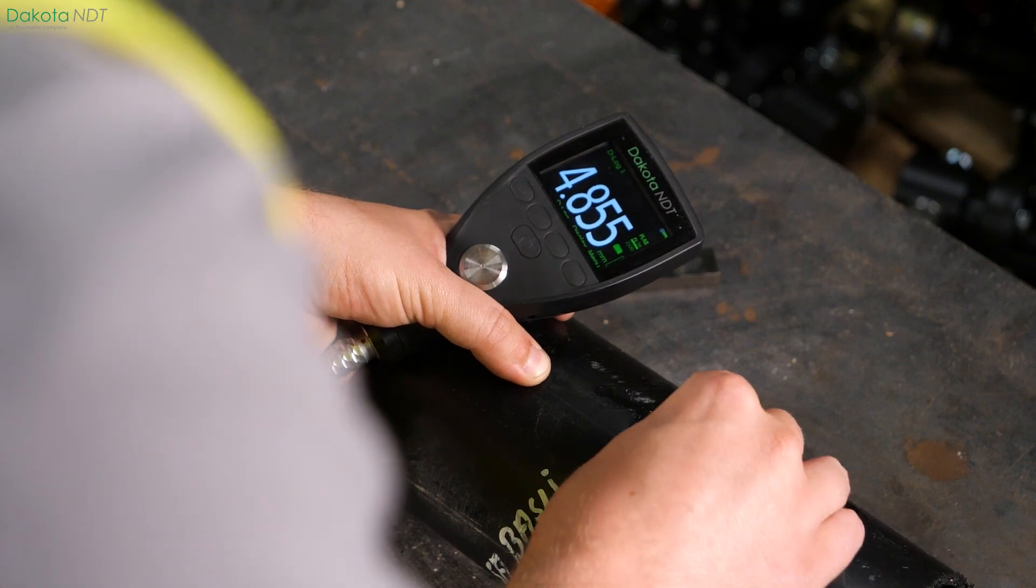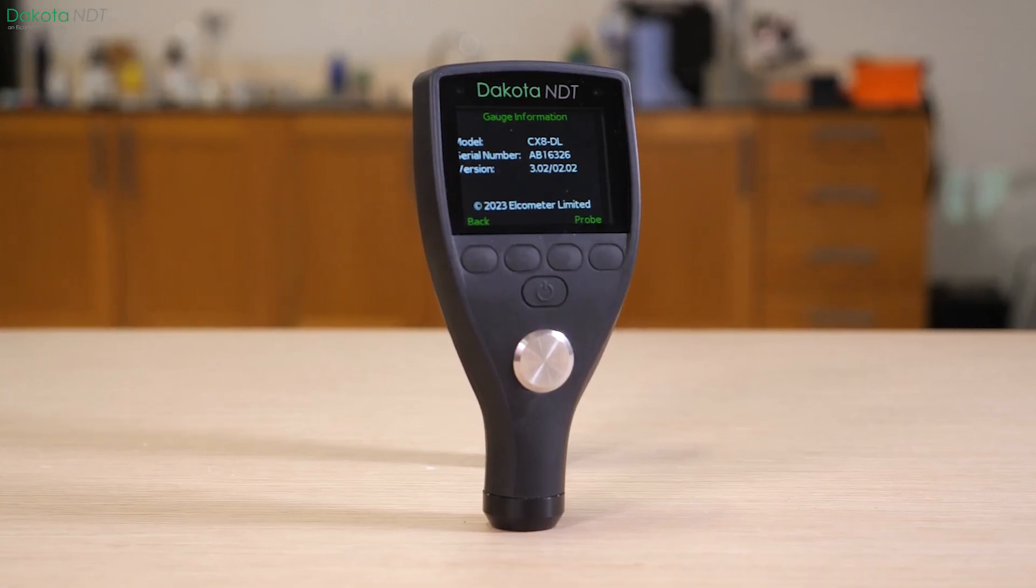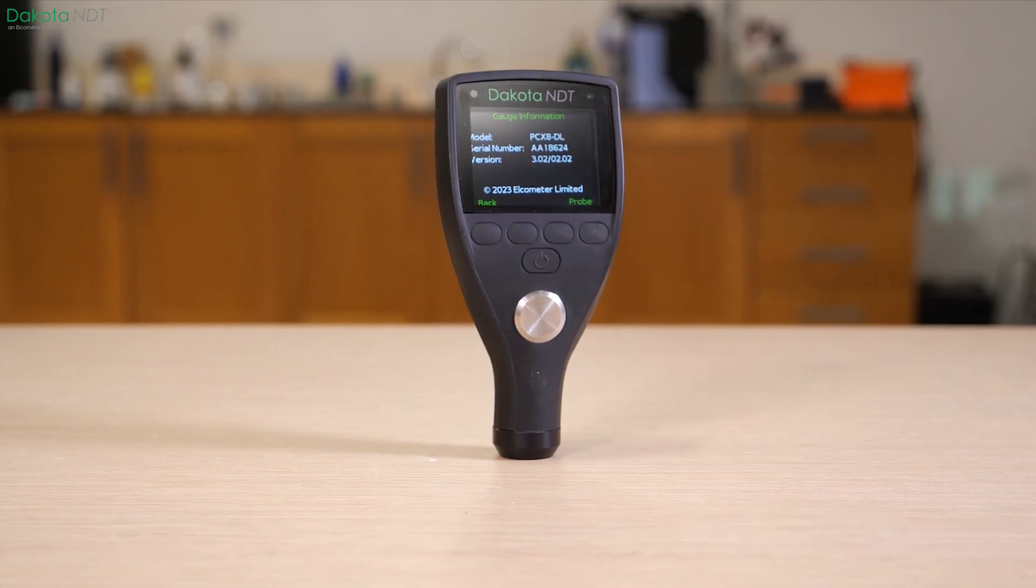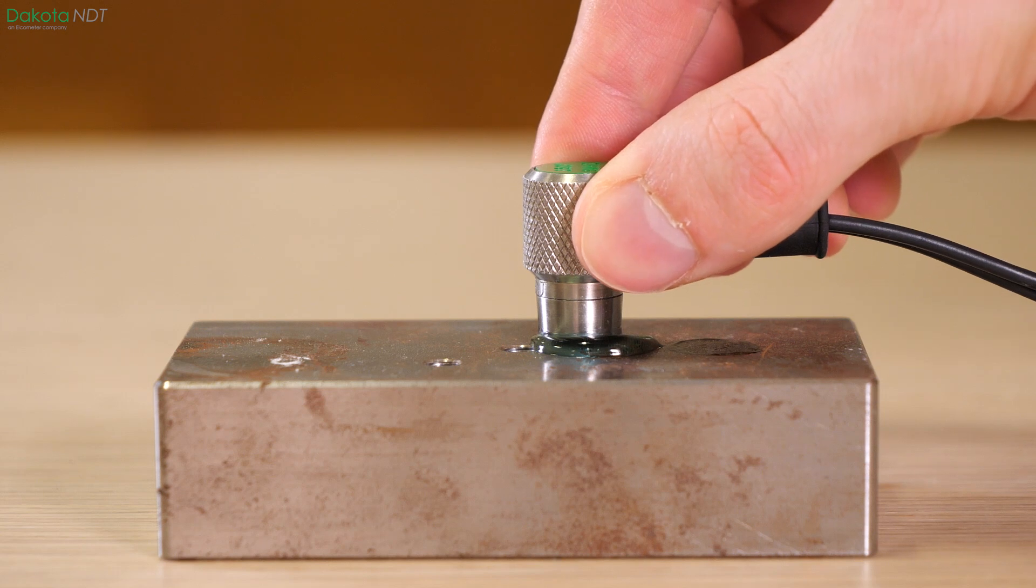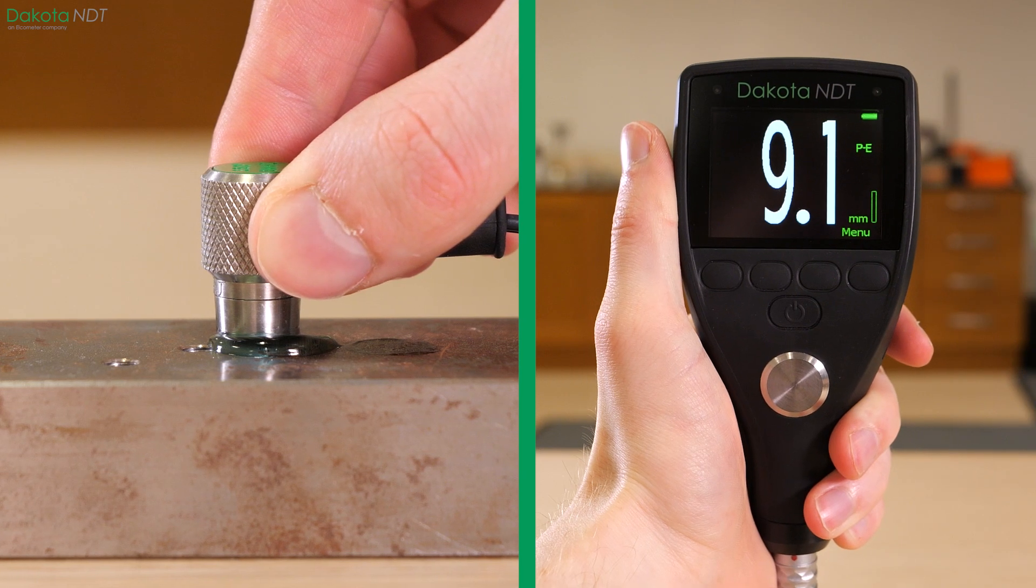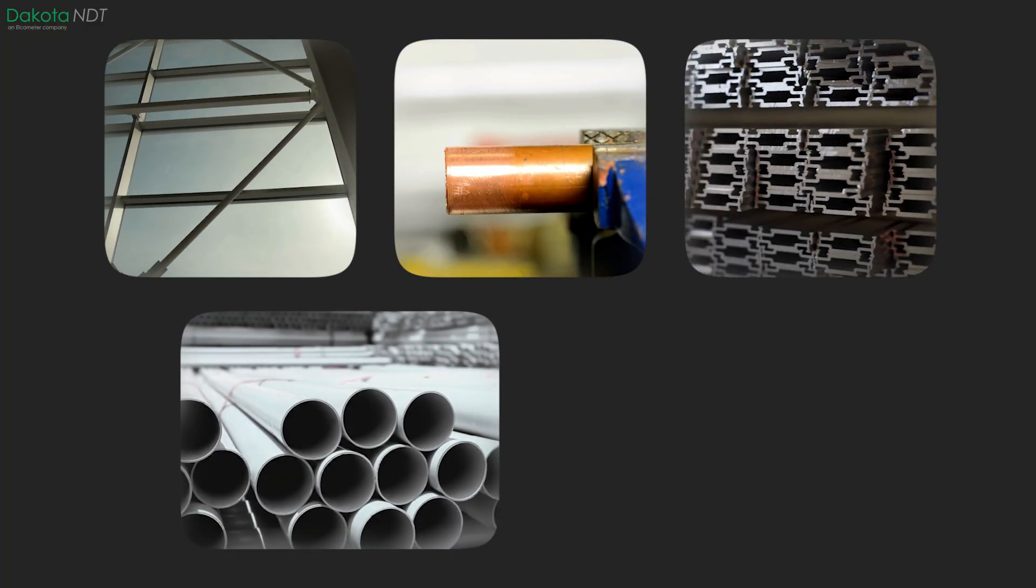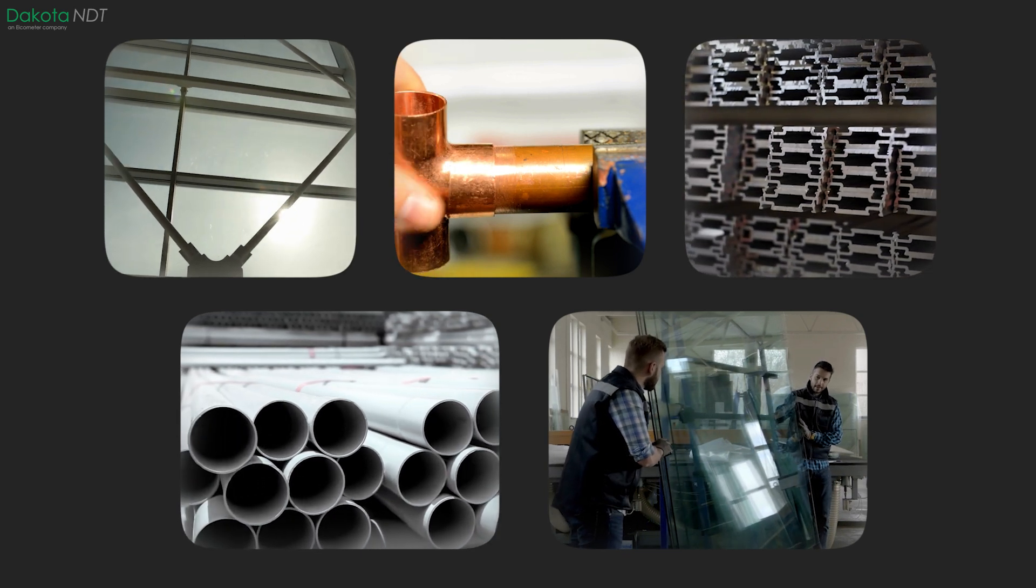Ultrasonic NDT gauges like the Dakota NDT-CX material thickness gauge and the Dakota NDT-PCX precision thickness gauge are designed to provide accurate and reliable material thickness measurements on a wide range of materials including steel, copper, aluminum, PVC and glass, making them a great fit for many inspection applications.